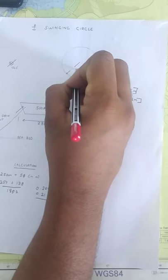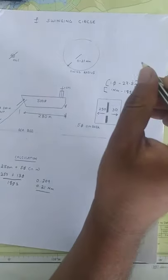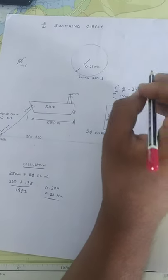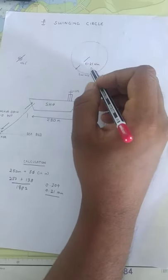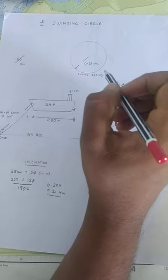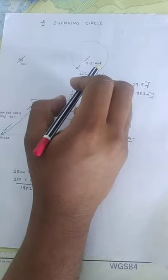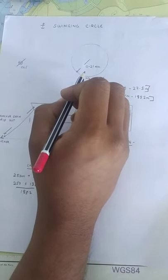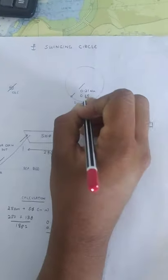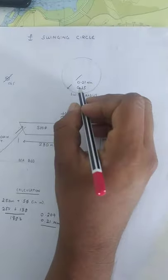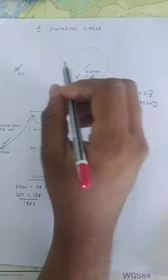Even if we give a leeway of around half a cable for error due to calculation, this will be the maximum your ship can come out unless she is dragging. Make it as 0.25 for the safe side. You keep a 0.25 distance on your GPS or on the chart. You will be able to find out if the ship is dragging.